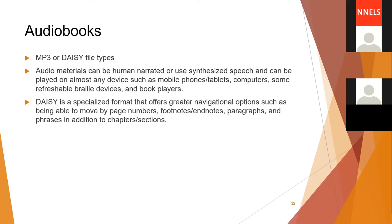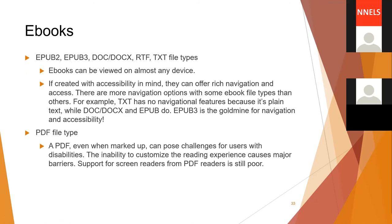DAISY generally requires a player that supports that format — players that may be designed for readers with print disabilities. When it comes to ebooks, formats include EPUB2 and EPUB3, DOC, DOCX, RTF, and TXT. Ebooks can be viewed on almost any device, and if created with accessibility in mind, they can offer rich navigation and access. TXT has no navigational features because it's plain text, while DOC, DOCX, and EPUBs do.